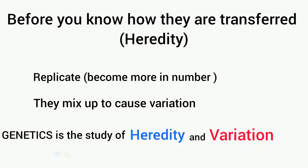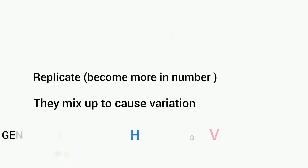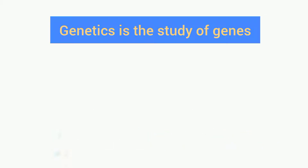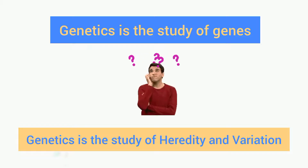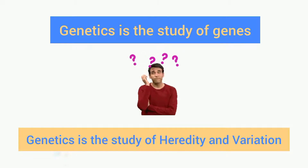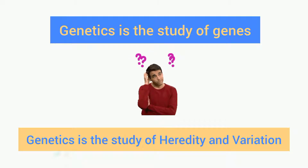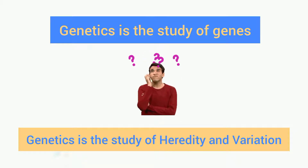We already know that genetics can be defined as the study of genes, and we also know that genetics is the study of heredity and variation. But are these two definitions different from one another? Take a look at these two definitions — do you think they are the same, or are they related?